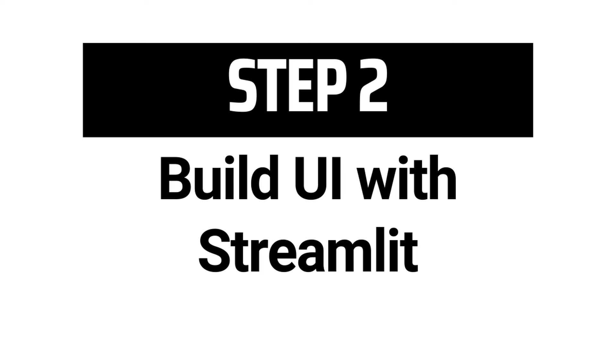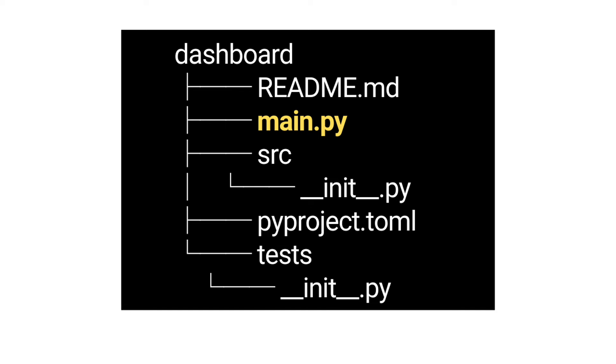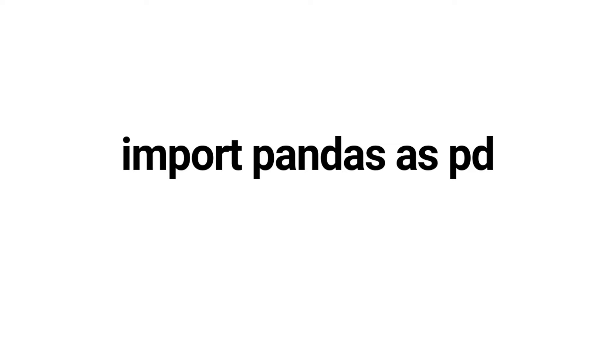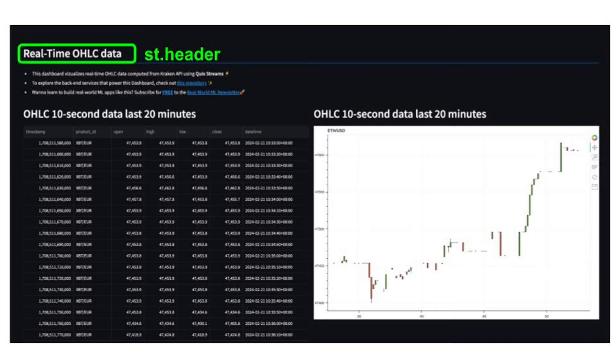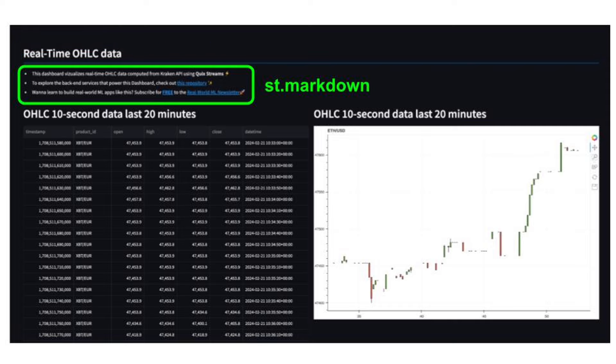Step two: build the UI using Streamlit. First you need to install Streamlit inside your virtual environment with 'poetry add', then add a new file called main.py in your project. This is the script that will define our UI. At the top of this file you need to import Streamlit, then any third-party dependencies such as pandas, and then local dependencies that we will implement in our source folder.